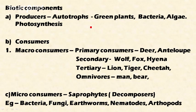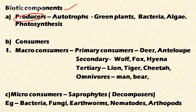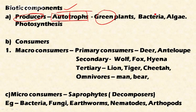The second main component of the ecosystem is the biotic component — the living component. Producers produce their own food and are called autotrophs because they have the capacity to produce their own food. 'Auto' means self. This includes green plants, bacteria, and algae.